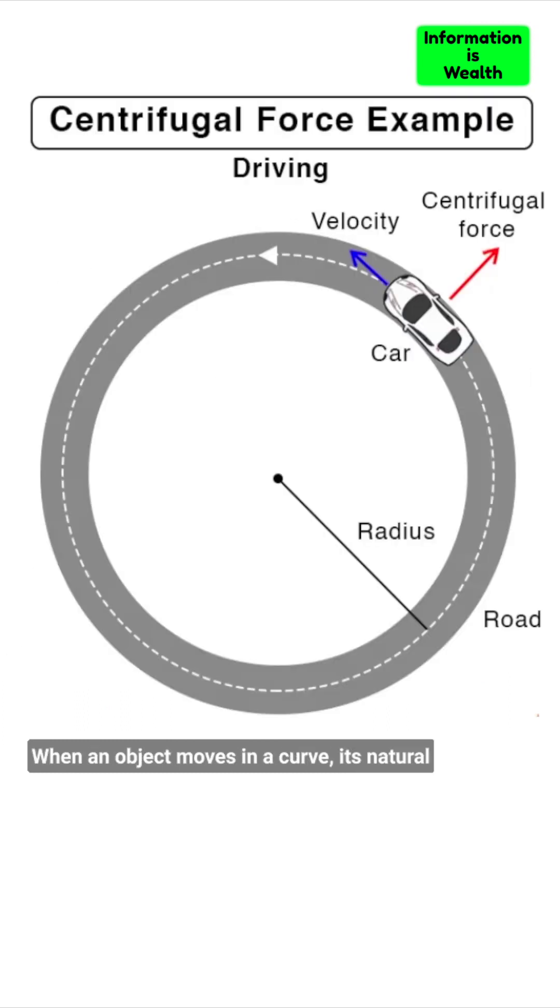When an object moves in a curve, its natural tendency is to keep going in a straight line. However, because it's in a curve, it gets pulled towards the center.